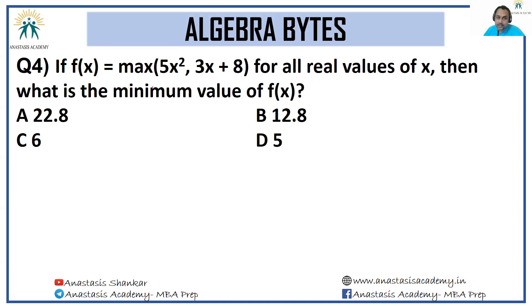Next, if f(x) = max(5x², 3x + 8) for all real values of x, what is the minimum value of f(x)? Equate them: 5x² - 3x - 8 = 0.